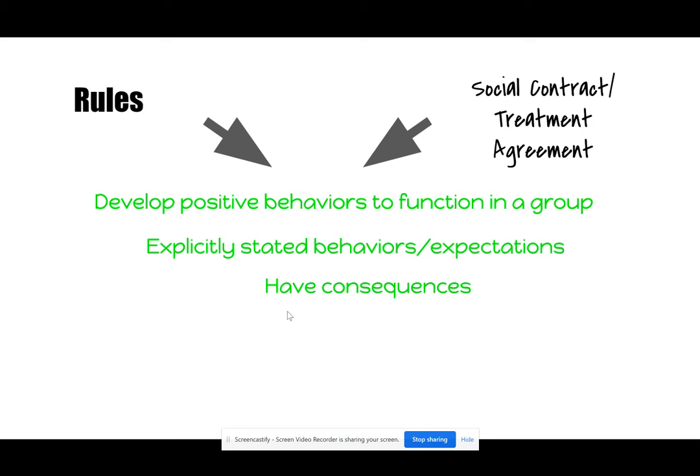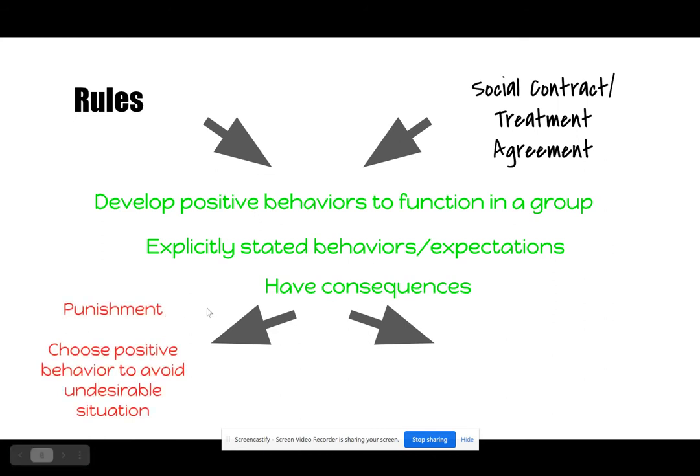A lot of people think social contracts and treatment agreements don't have consequences. They absolutely do — they are just different from the kinds of consequences that happen when rules are broken. The consequences for rules are punishments. When you break a rule, something undesirable to you happens as a result. That is the definition of a punishment.